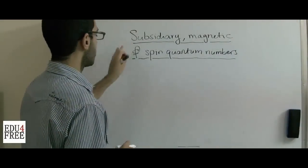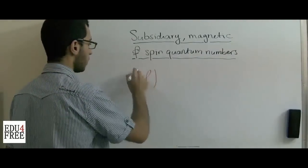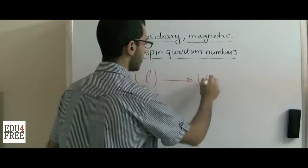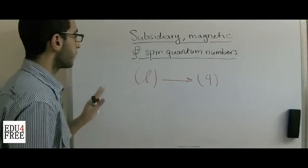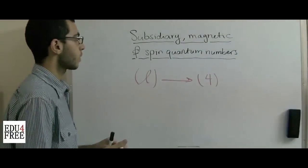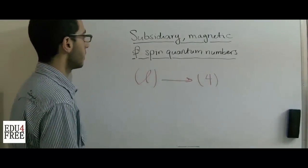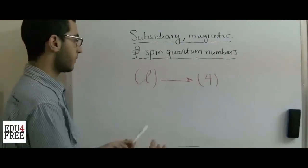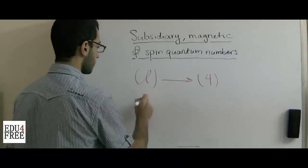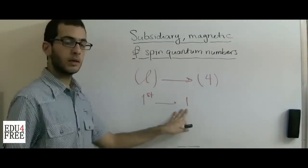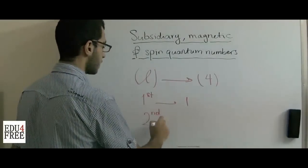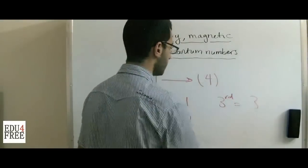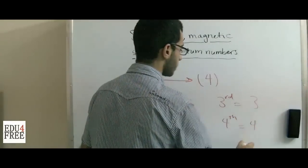The subsidiary quantum number is referred to as small l. We have four subsidiary quantum numbers. The number of secondary energy levels or orbitals found in an energy level equals the order of that energy level. So the first energy level contains one secondary energy level, the second contains two, the third contains three, and the fourth contains four secondary energy levels.